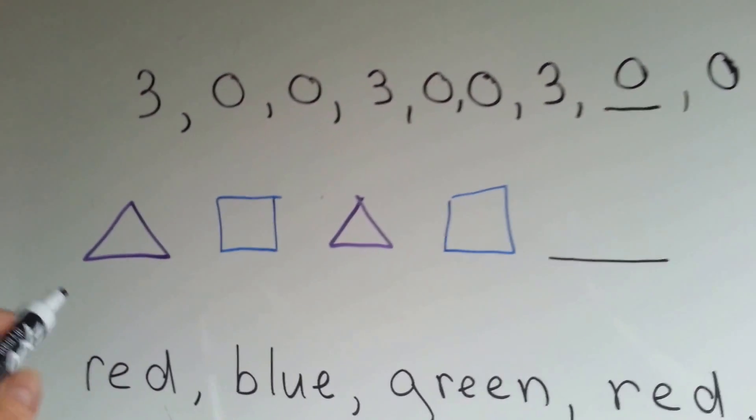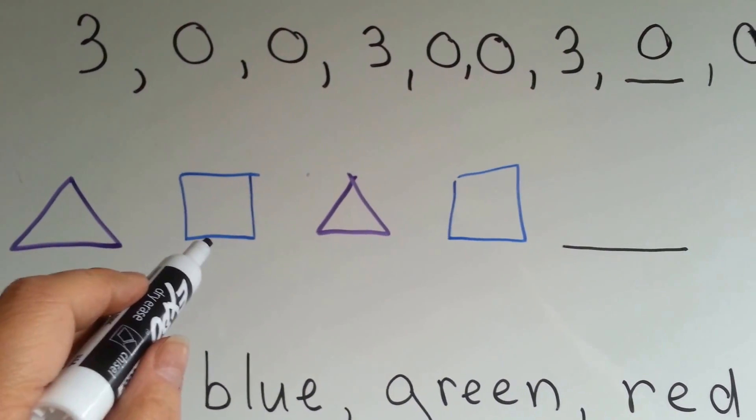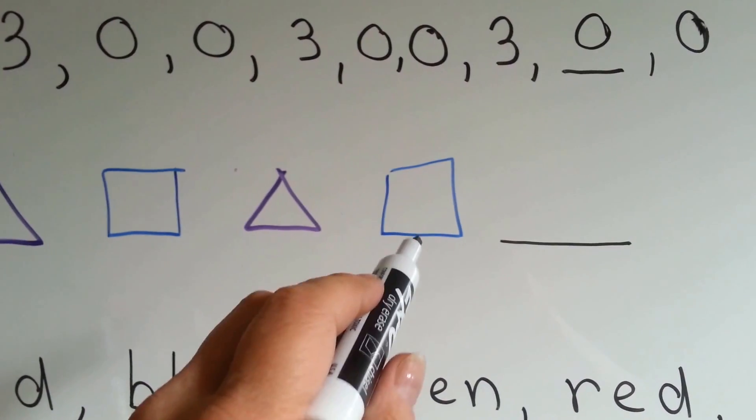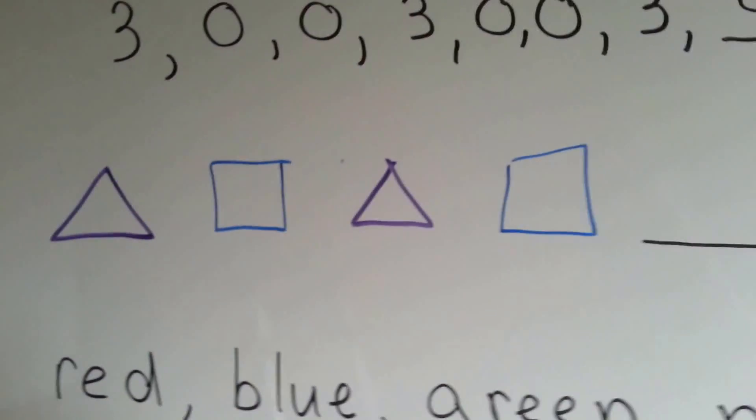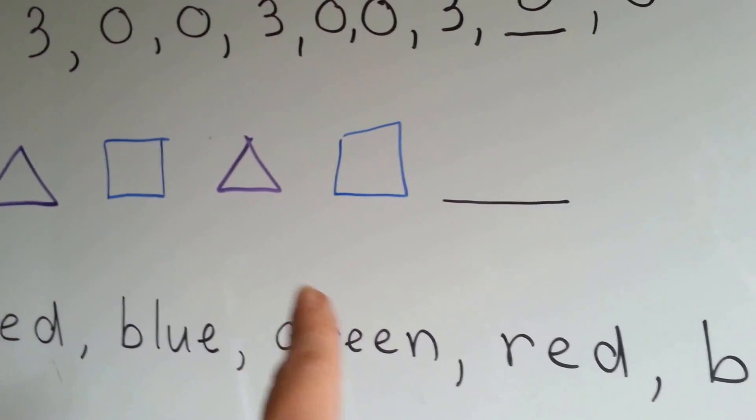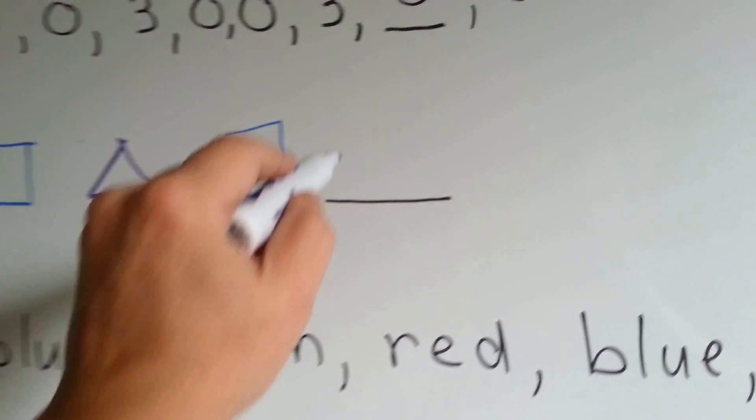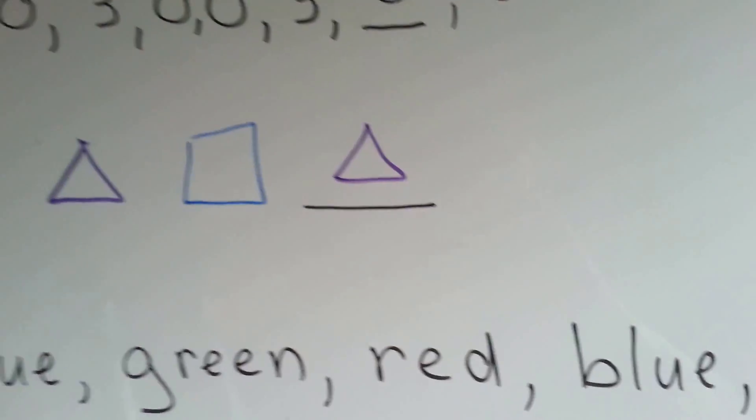How about this one? Purple triangle, blue square. Purple triangle, blue square. What do you think comes next? Purple triangle, blue square. Purple triangle, blue square. Purple triangle. That's the pattern.